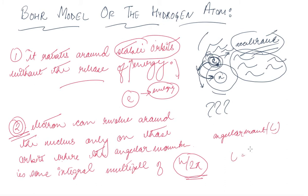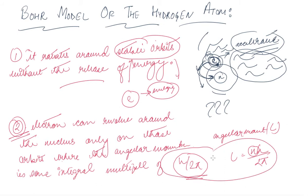The angular momentum is given by n times h upon twice pi, where n is the orbit number. This was Bohr's second postulate.